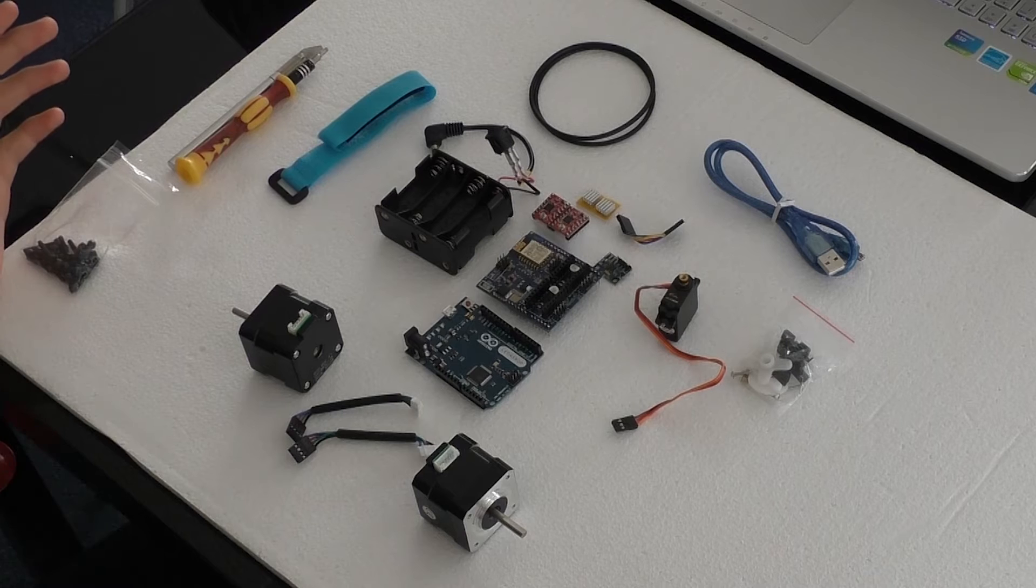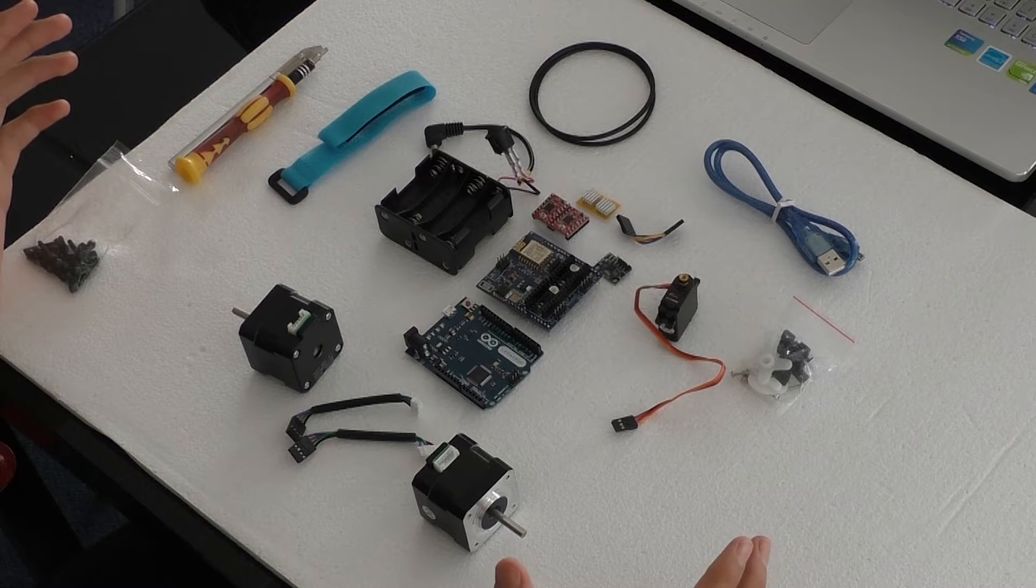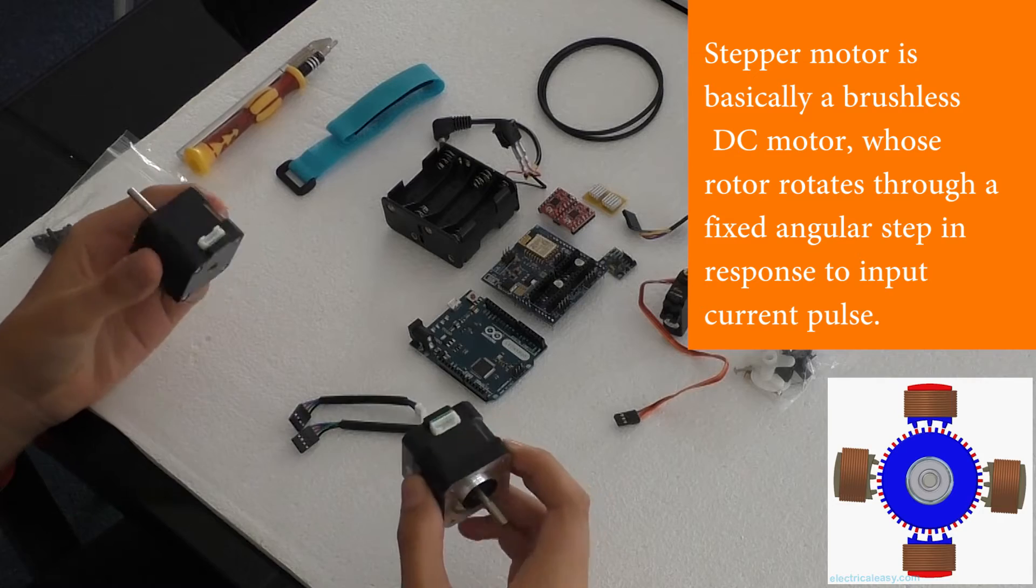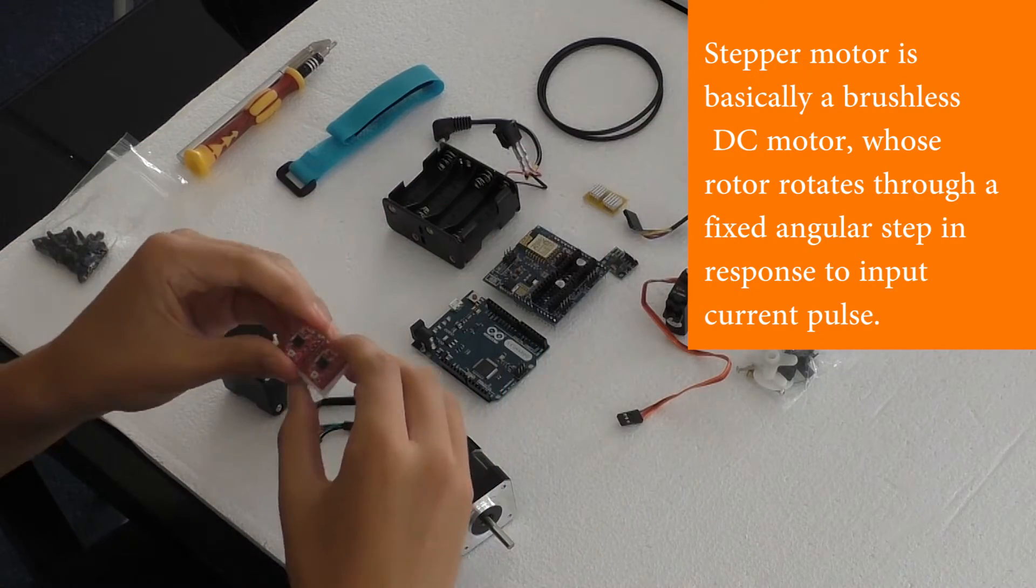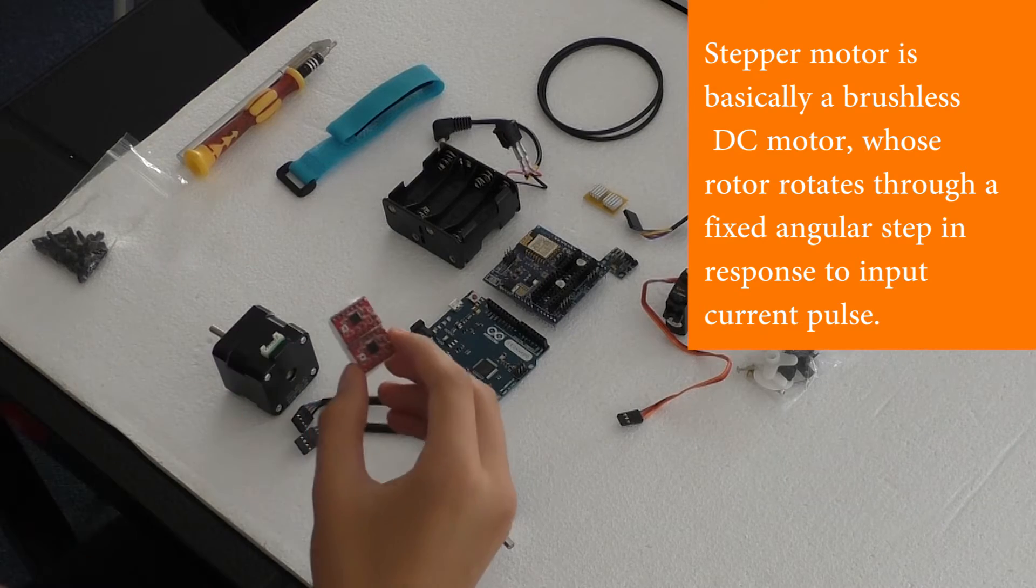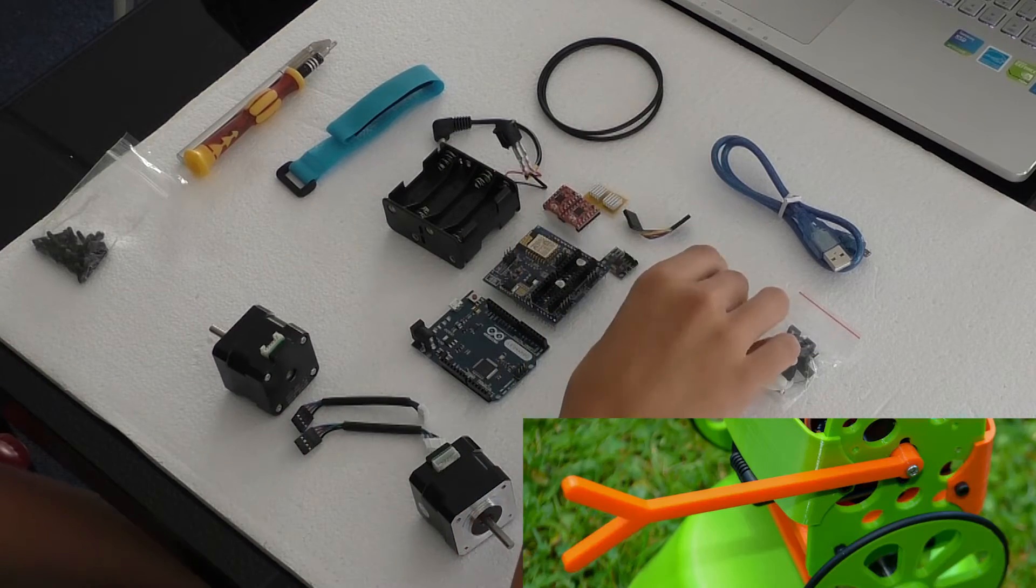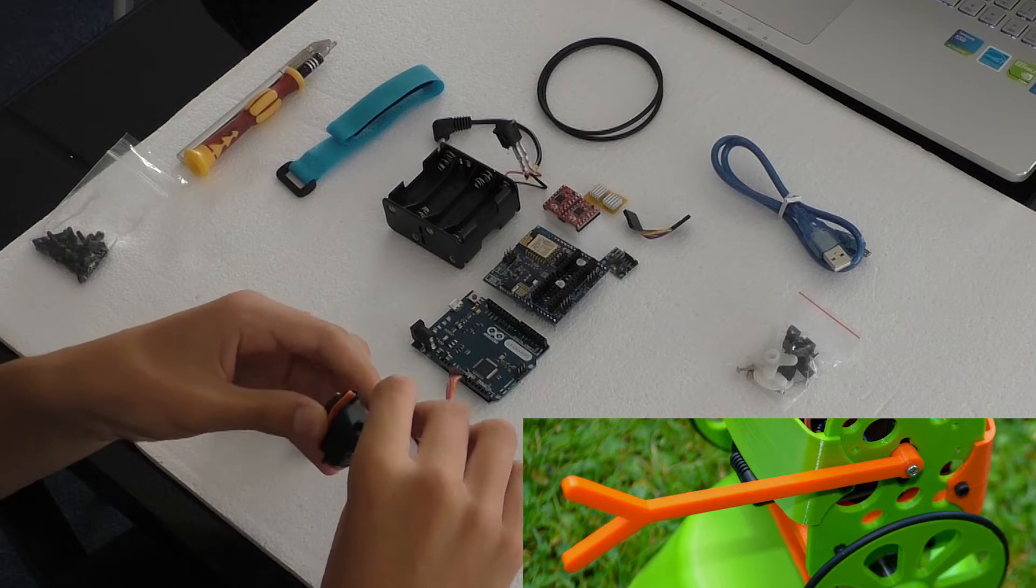These are all the electronic components used in the Balanced Spot. First, we start with the stepper motors. These are used to drive the wheels. This is the stepper motor controller, used to control the stepper motors. This is the servo arm, used for battle arms.